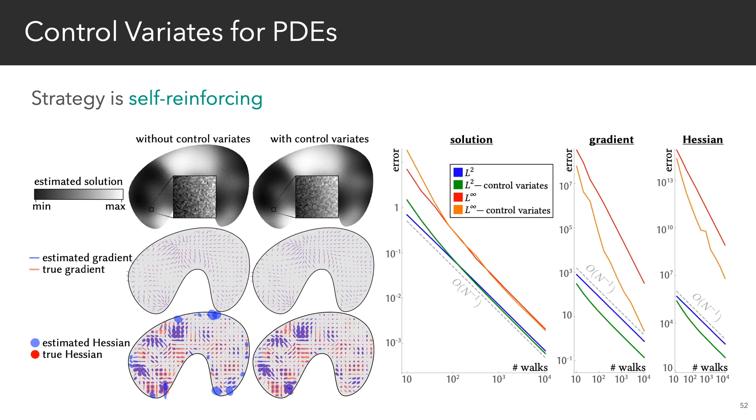So here, we estimate the solution and the derivatives of a Poisson equation on the domain on the left. And on the right, what you see is variance reduction due to the control variates, especially for the gradient and the Hessian.